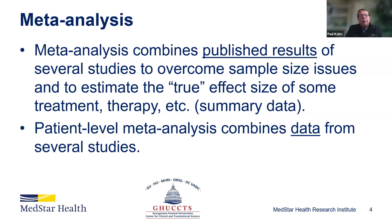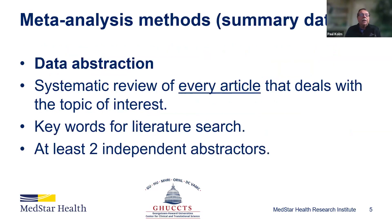A patient-level meta-analysis, which you sometimes see, is a meta-analysis that combines the actual data from several studies. You probably don't see this too much because there are issues in getting data from different studies - if it's across institutions, some institutions may not be willing to share their data, or it usually involves getting legal permission. So we're going to focus on meta-analysis where we are using summary data.